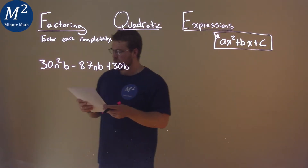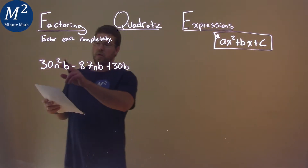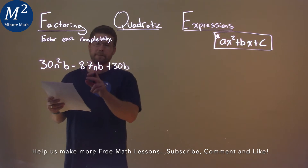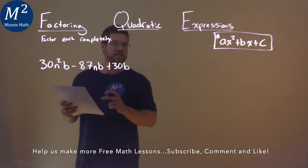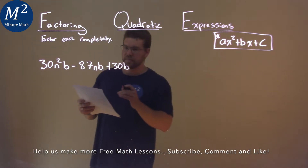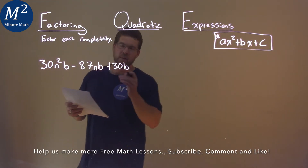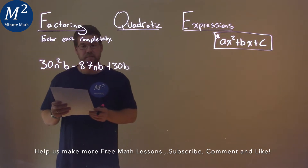We're given this problem right here: 30n squared b minus 87nb plus 30b, and we want to factor this completely.